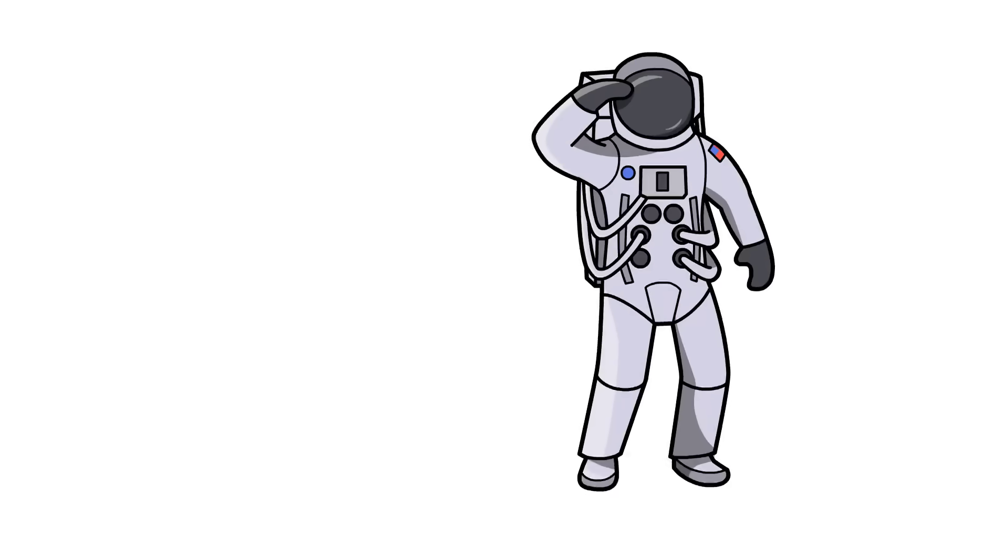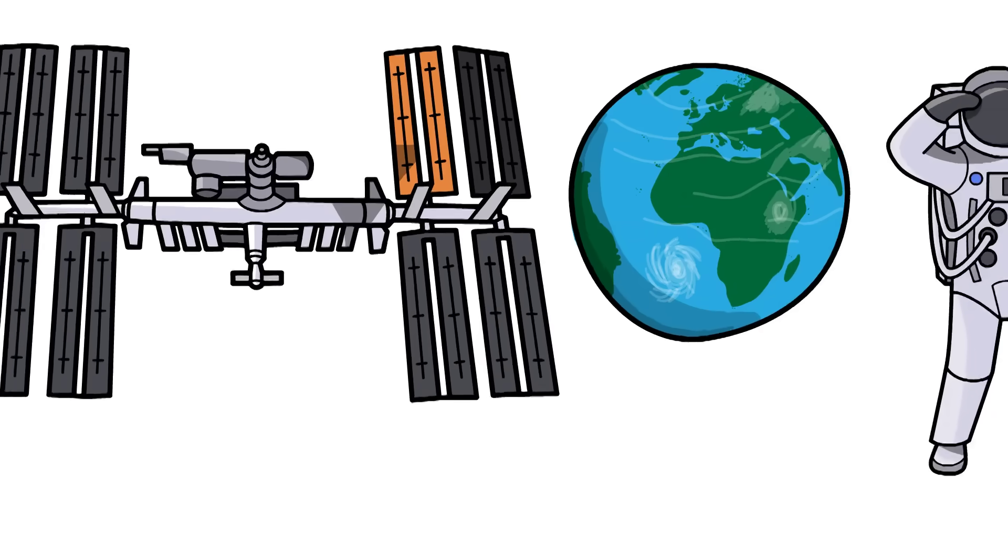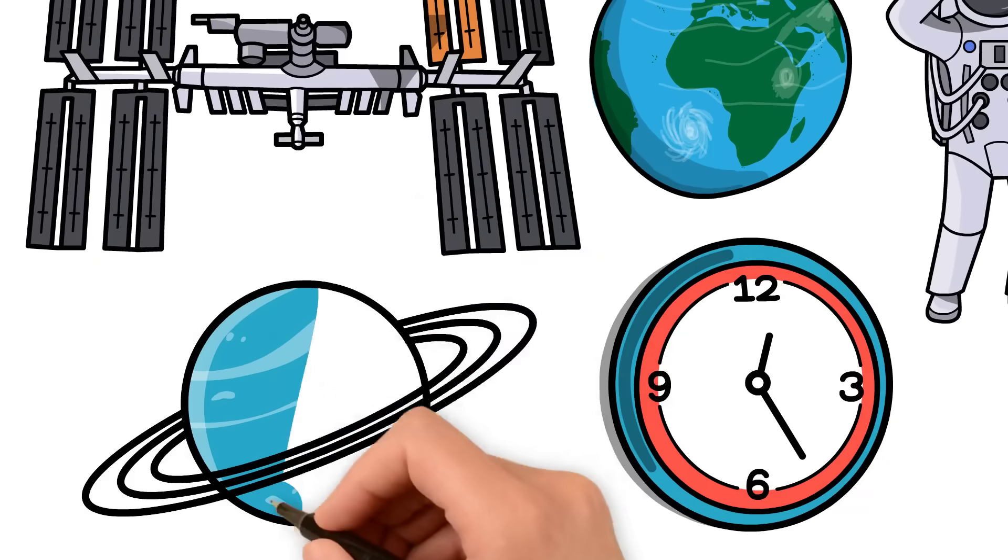Astronauts on the International Space Station age ever so slightly slower than people on Earth. And deep near a black hole, time nearly comes to a stop compared to the rest of the universe.